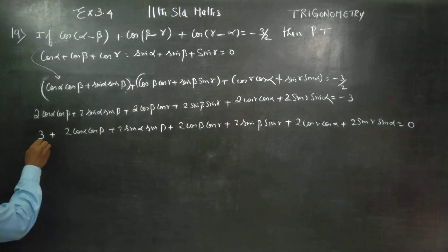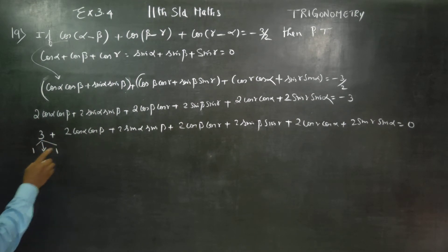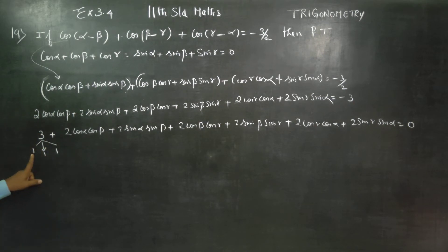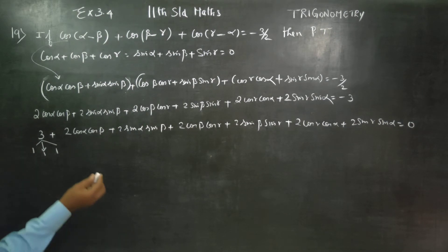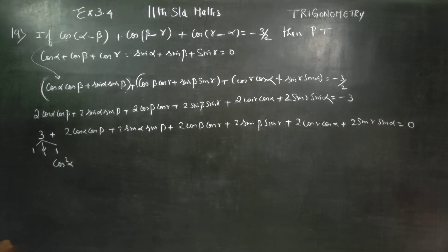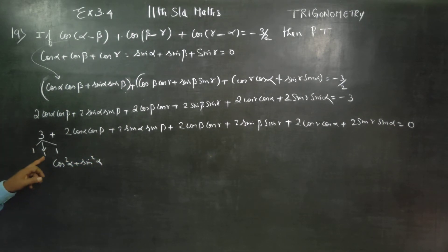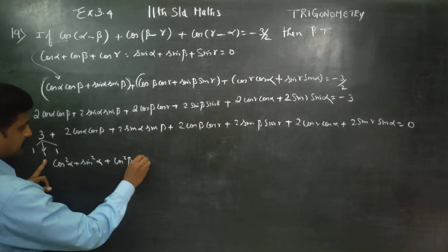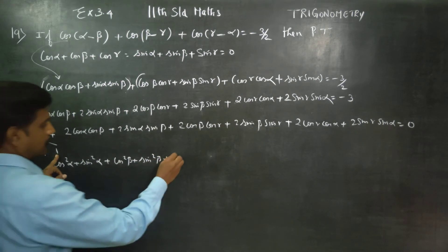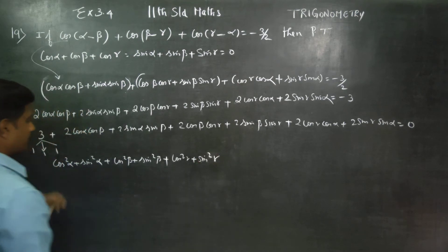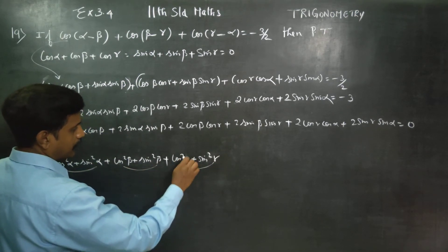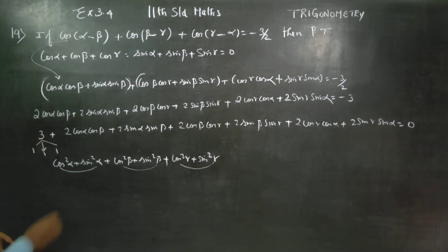Now, 3 is split as 1 plus 1 plus 1. We use the identity cos squared theta plus sin squared theta equals 1. So cos squared alpha plus sin squared alpha equals 1, cos squared beta plus sin squared beta equals 1, and cos squared gamma plus sin squared gamma equals 1. Adding these gives 1 plus 1 plus 1 equals 3.